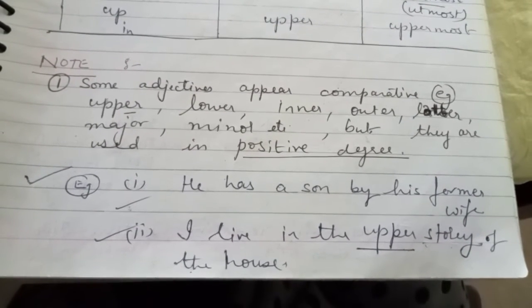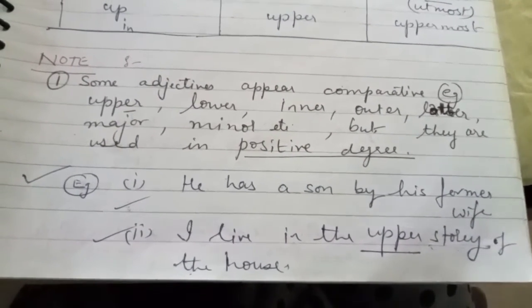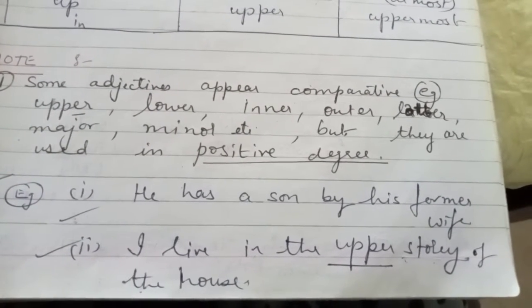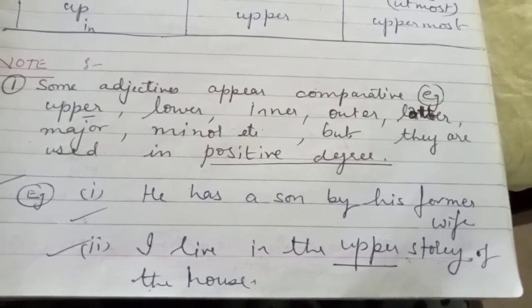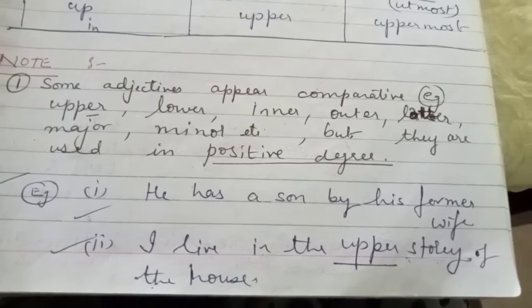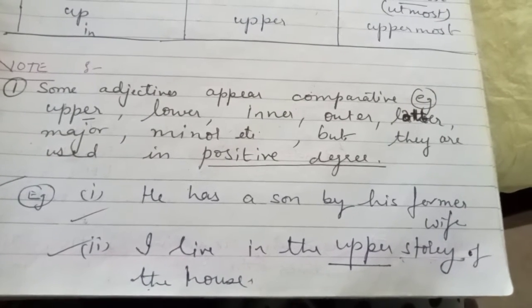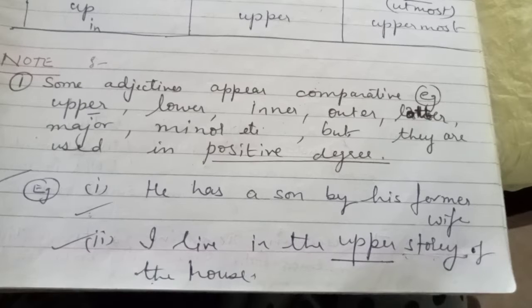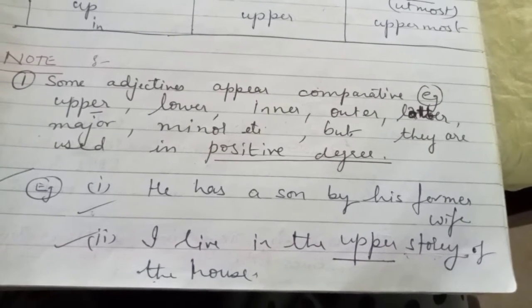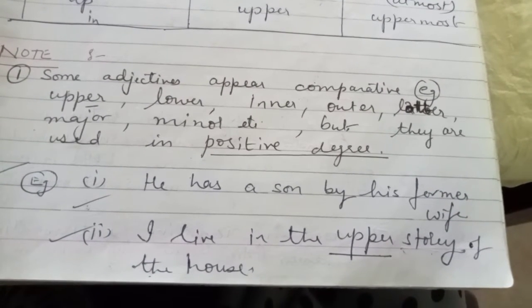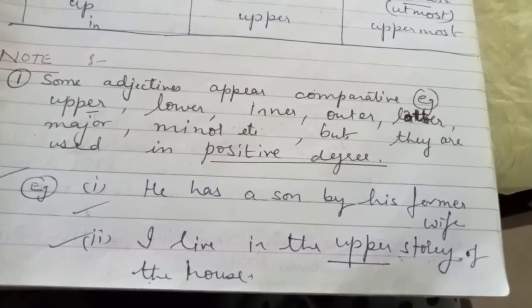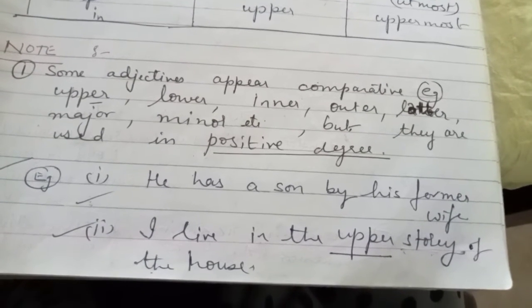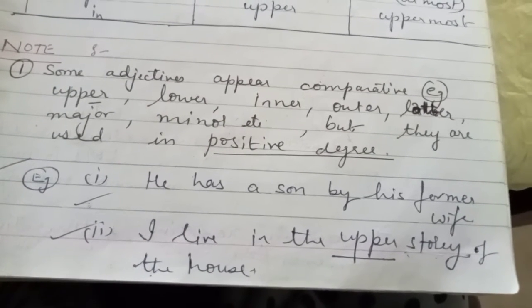That means it's a warning signal — you have to check this. For example: 'He has a son by his former wife.' Here, 'former wife' means his first wife. There is no comparison here with a second wife. Therefore, it is just an adjective of positive degree. So 'former' ends in ER but is not comparative.